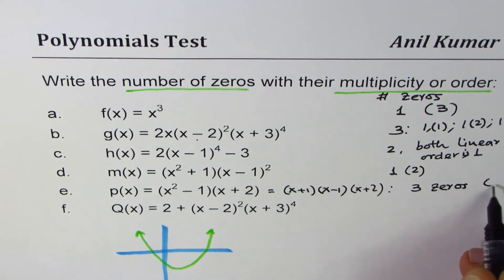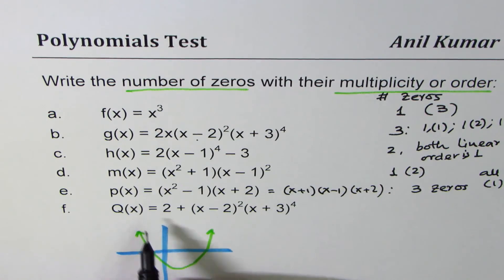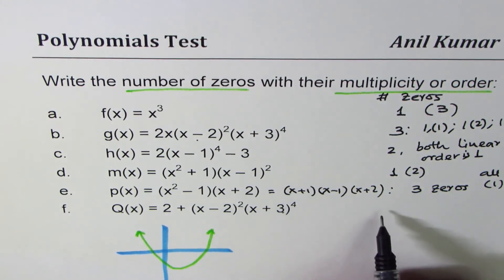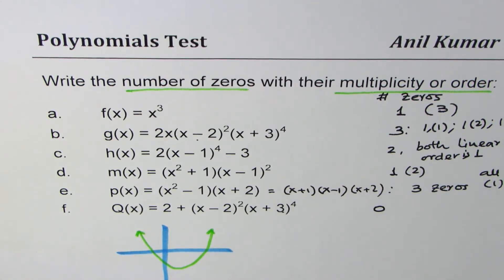And here we have 2 + (x-2)²(x+3)⁴. Now all these terms are always positive, they're never zero, so here we have none. So we can write no zero at all.